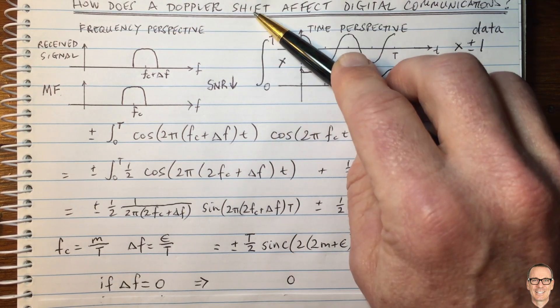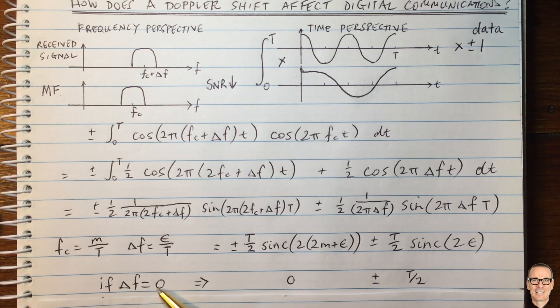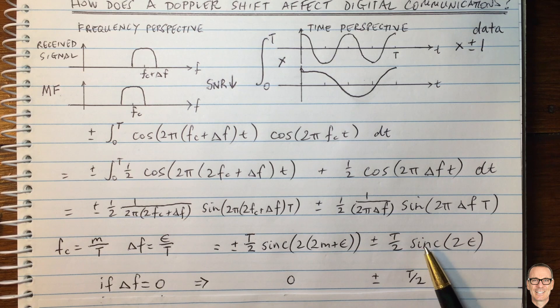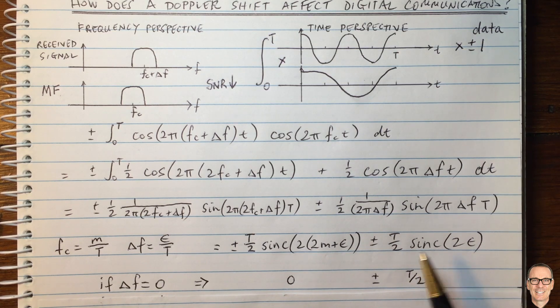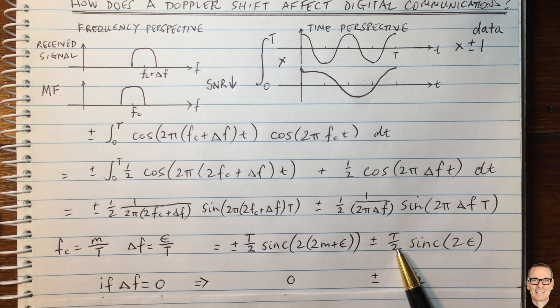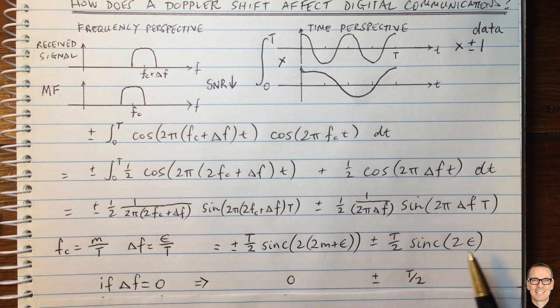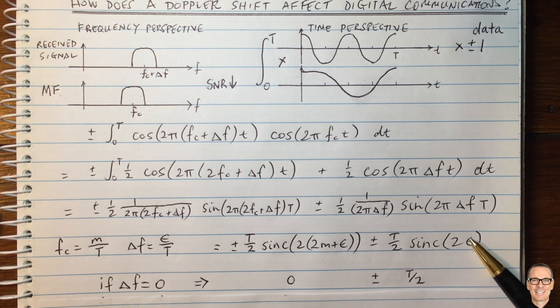So what happens when you do have a Doppler shift? Well, epsilon is not equal to zero. And we can see here, this term will be a smaller number. It'll be T divided by two times the sinc of two epsilon. And the sinc function is a function that rolls off.